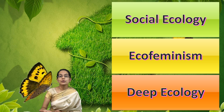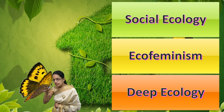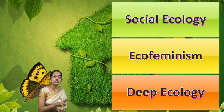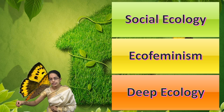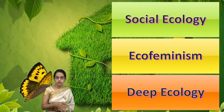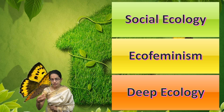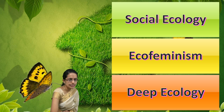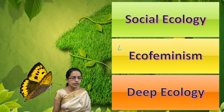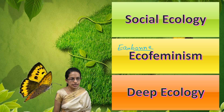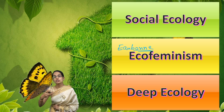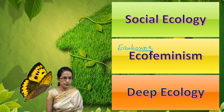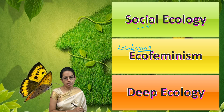Ecofeminism talks about a crucial connection between the exploitation of women and the domination of nature. A French writer, Françoise d'Eaubonne, tried to explain in her works how there is a deep connection between the two, and how the domination of the natural world is central to this idea.